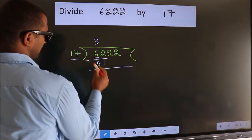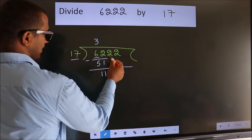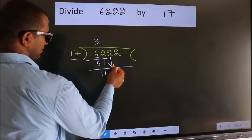Now we should subtract. We get 11. After this, bring down the beside number. So 2 down.